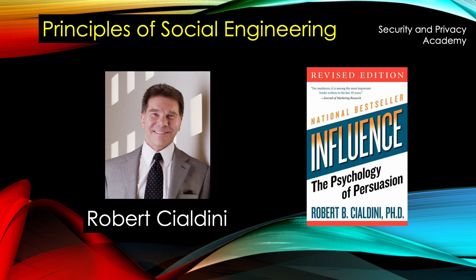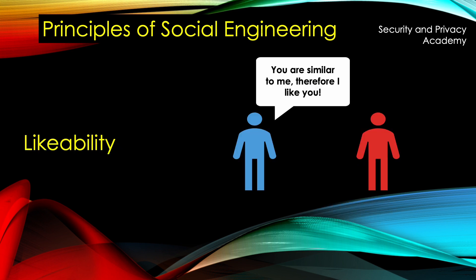Now we'll go over the six principles of social engineering by Robert Cialdini in his now very famous book, Influence: The Psychology of Persuasion. The first one is likability. People like people who are like them. So if someone is similar to you in any way — and this could be very mundane things such as wearing the same band shirt or the same kind of hairstyle — people tend to like people that are similar to them.